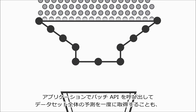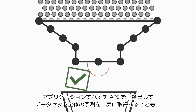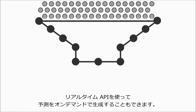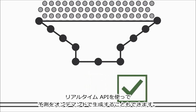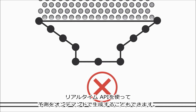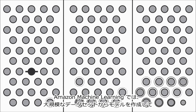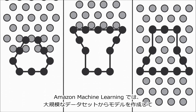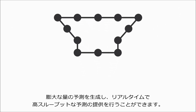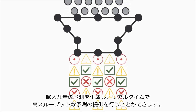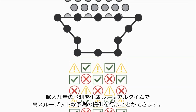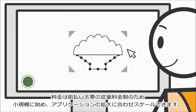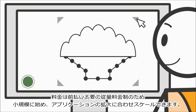Your applications can either call the batch API to get predictions for entire datasets at once, or you can use the real-time API to generate predictions on demand. With Amazon Machine Learning, you can create models from large datasets, generate billions of predictions, and serve these predictions in real-time and at high throughput. There's no upfront cost, and you pay as you go, so you can start small and scale as your application grows.